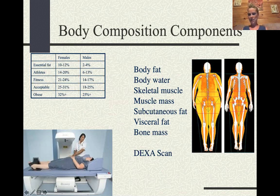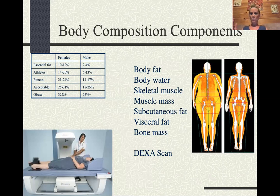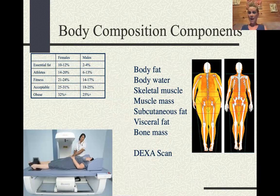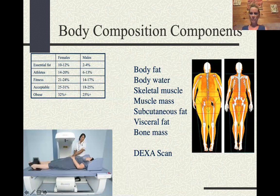The individual on the right appears to have stronger skeletal structuring — probably exercising regularly with less body fat — while the one on the left looks more sedentary. Body composition breaks down into body fat, body water, skeletal muscle, total muscle mass, and subcutaneous fat — the fat underneath the skin. Women have more subcutaneous fat than men, which is why women tend to look softer.